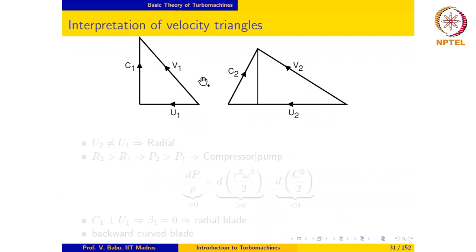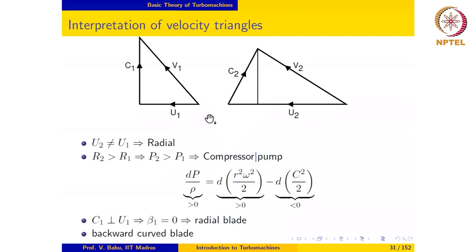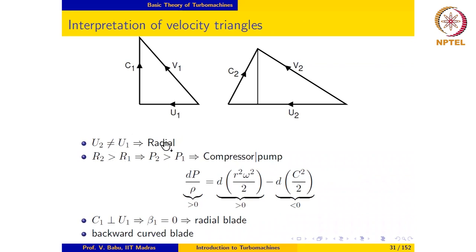Here we are given two velocity triangles: one at the inlet to the rotor and one at the exit to the rotor. We notice right away that U2 is not equal to U1, so the blade speed actually increases from inlet to exit of the rotor, which implies that the machine is a radial flow machine. Furthermore, since U2 is greater than U1, it follows that R2 is greater than R1, so the machine is actually a radial outflow machine.